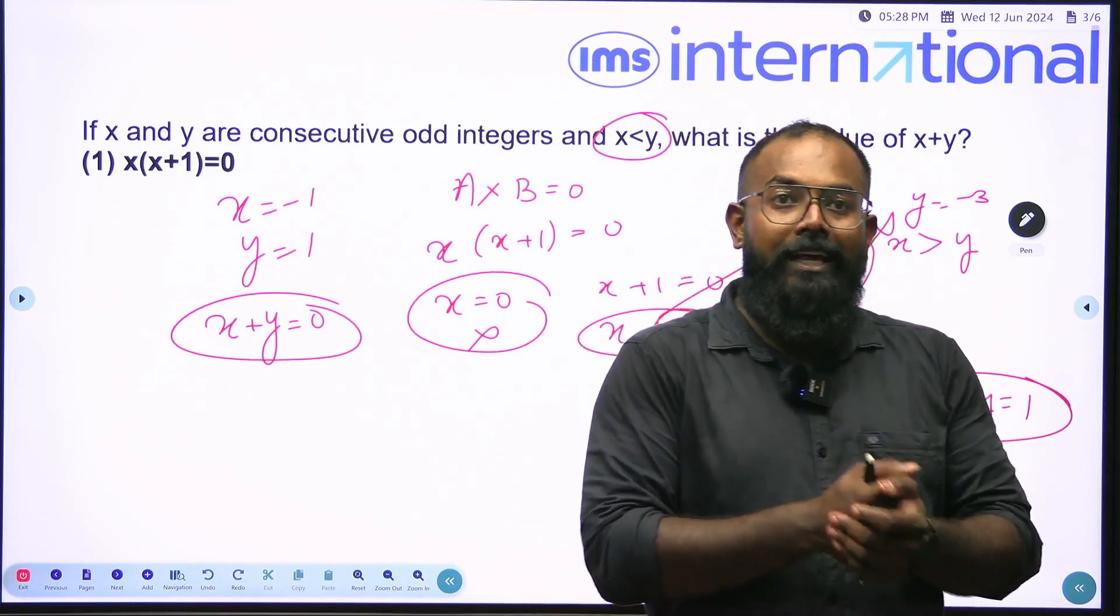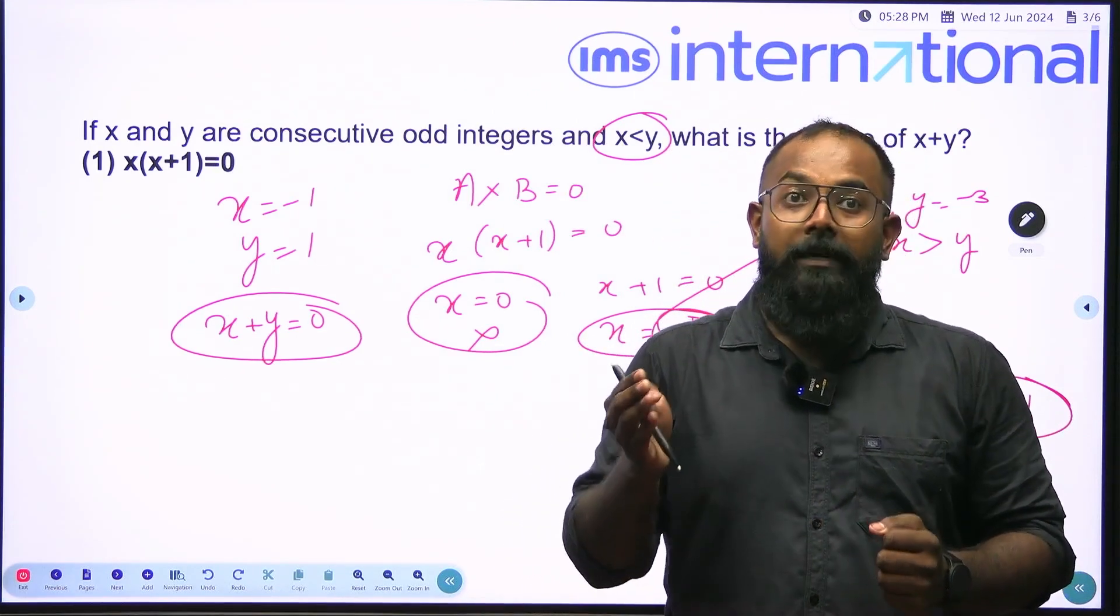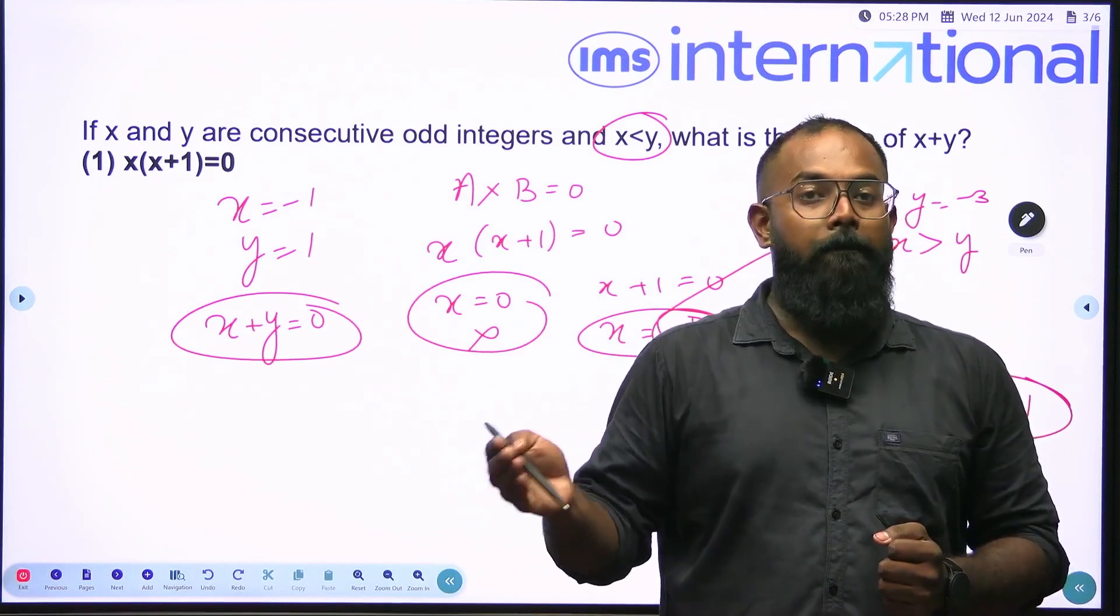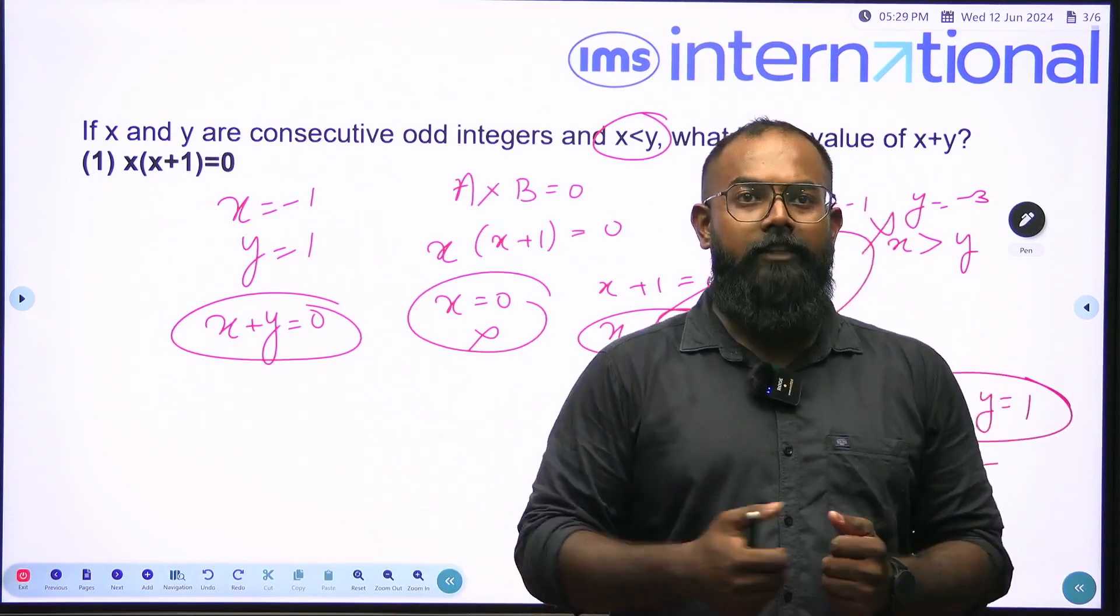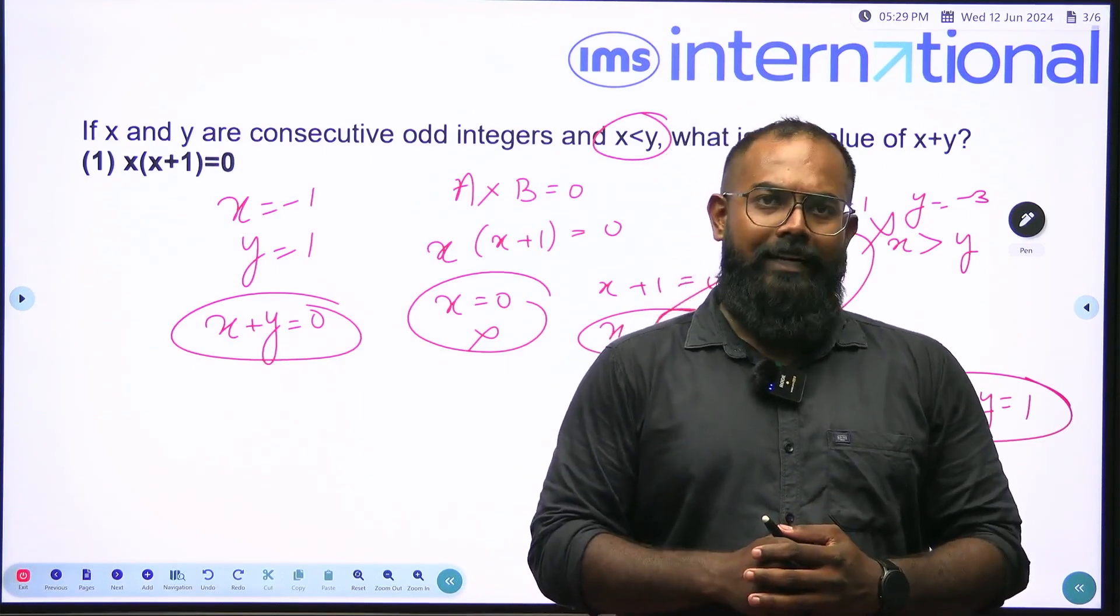But can we go ahead with option A? No. Because option A says statement 1 alone is sufficient but not statement 2. Since we have not discussed statement 2, we cannot go ahead with the first option. Now let us discuss the second statement.